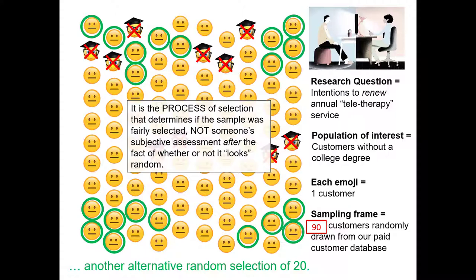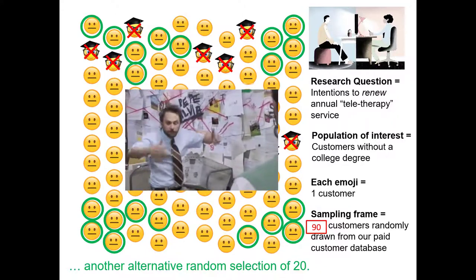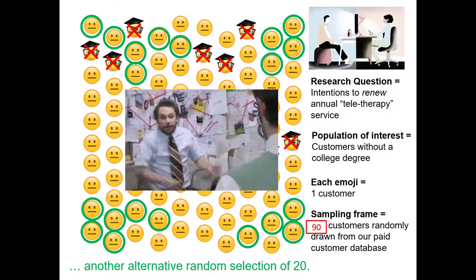It was the actual process of selection itself that determines if simple random sampling was done. That's a very important point and one that humans often get wrong. When we do random drawings, it's common for people to look at the results and say it doesn't look random enough. That is a fatal flaw in understanding. It's the process of selection that matters. Sometimes that process creates things that look like patterns.